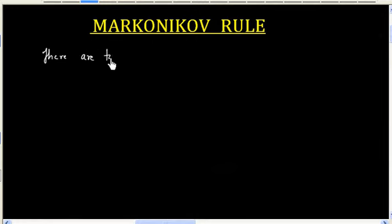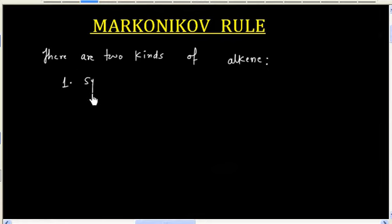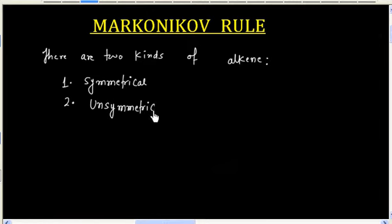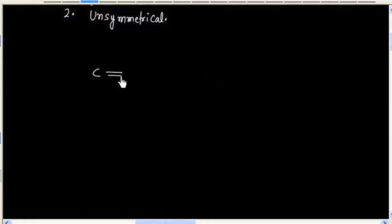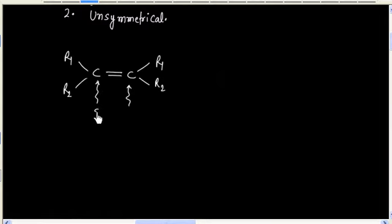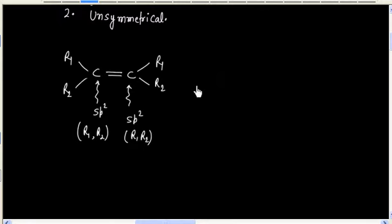There are two kinds of alkene. One is symmetrical alkene and another is unsymmetrical alkene. In case of symmetrical alkene, both Sp2 hybridized carbons have the same groups. So this carbon has R1, R2 groups and this carbon also has R1, R2 groups. So this is a symmetrical alkene.